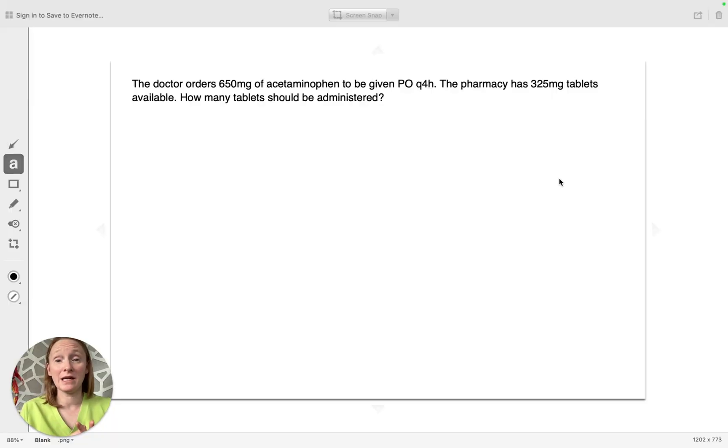Let's start with the PO med example. For those of you that are new to nursing school, PO stands for by mouth. It's Latin terms. If you haven't already watched my other video where I teach my six-step method, don't worry because you will still be able to follow along with the examples I'm doing here. The doctor orders 650 milligrams of acetaminophen to be given PO-Q4H. The pharmacy has 325 milligram tablets available. How many tablets should be administered?